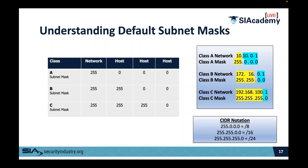The subnet mask identifies the network ID and the unique host on that network. Any host within a VLAN belonging to the same network is allowed to intercommunicate. Each 255 value is worth eight bits in binary, so 255.0.0.0 is /8, 255.255.0.0 is /16, and 255.255.255.0 is /24. This is known as CIDR notation.